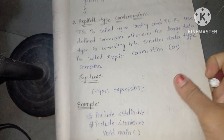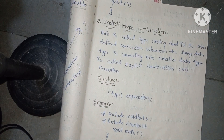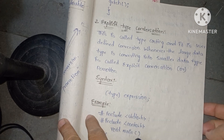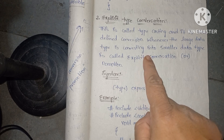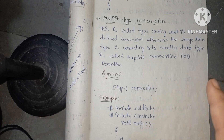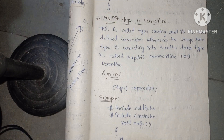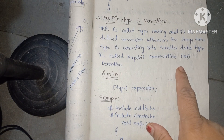Now we go for explicit type conversion. Explicit type conversion is also called typecasting. Type conversion means converting smaller data type into larger data type, whereas typecasting means larger data type is converted into smaller data type. Here the compiler does not do the conversion — the user only does it; it is a user-defined conversion. Whenever the data type is converted into a smaller data type, it is called explicit type conversion.